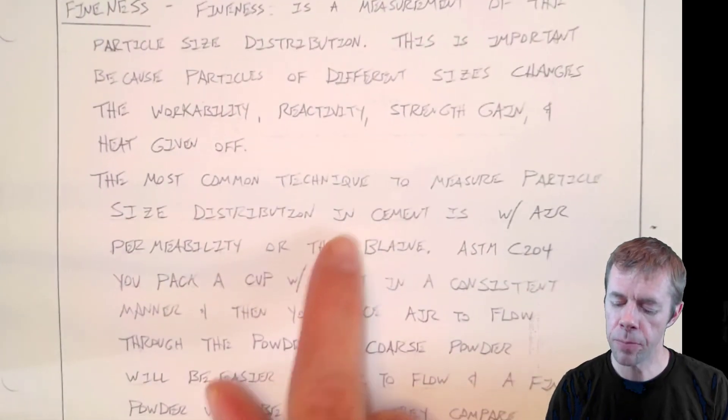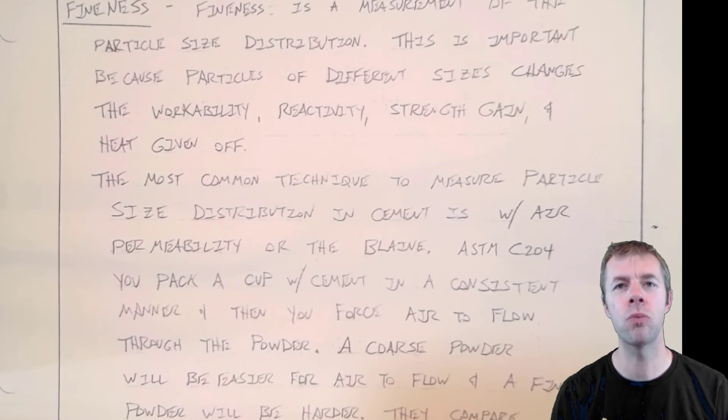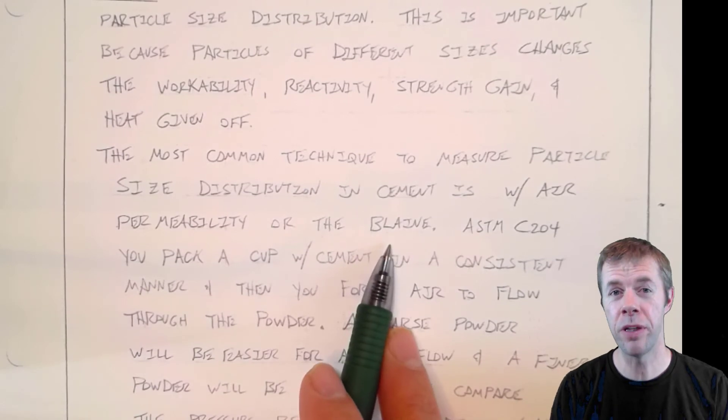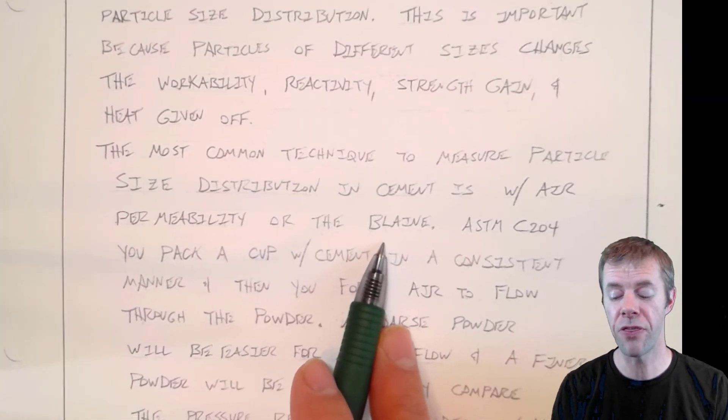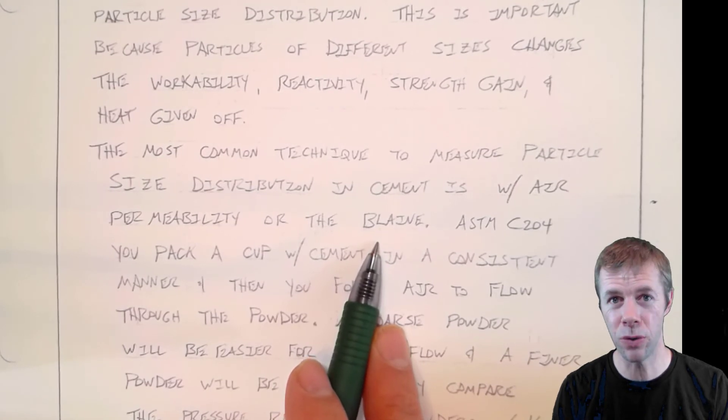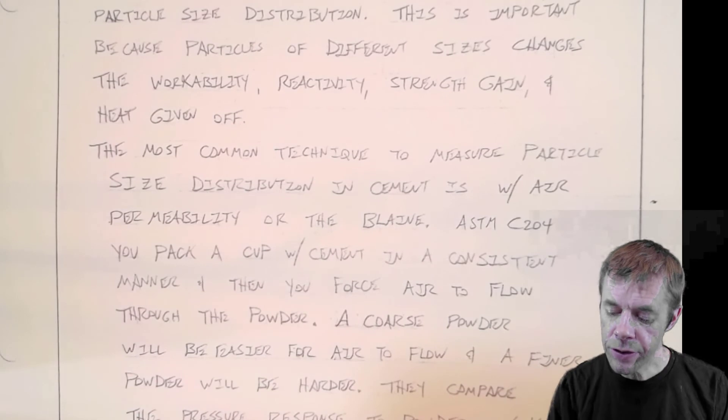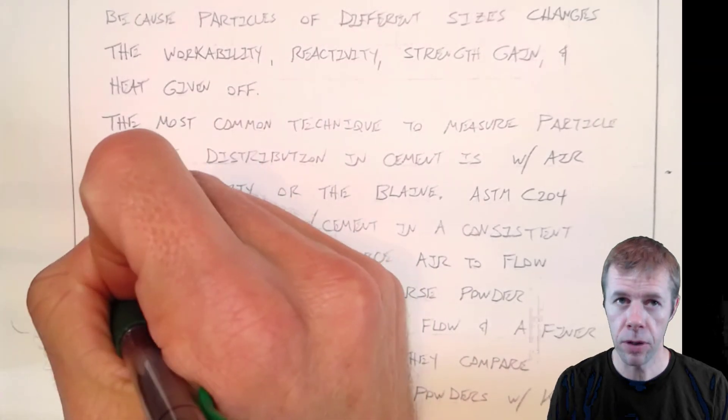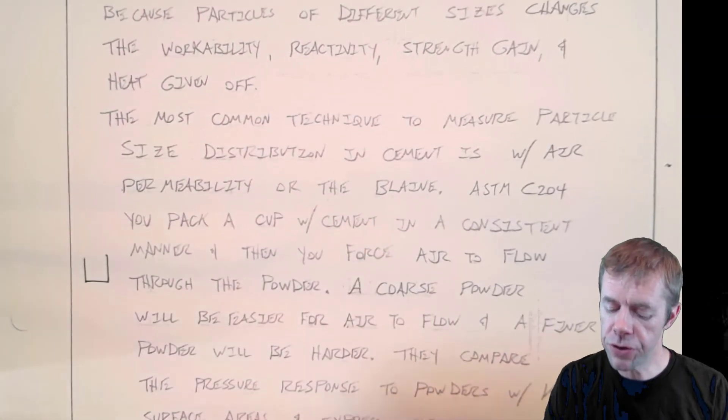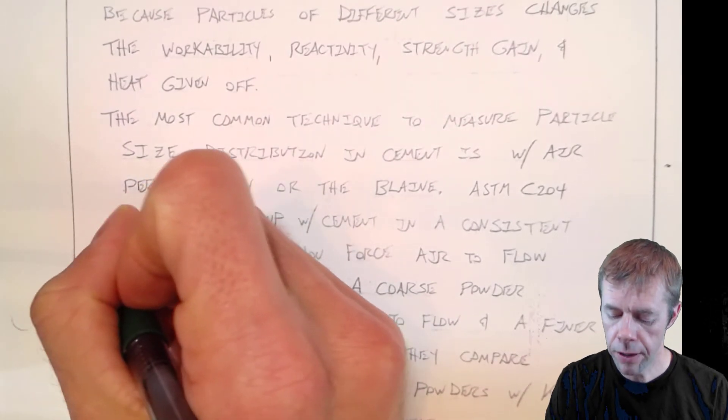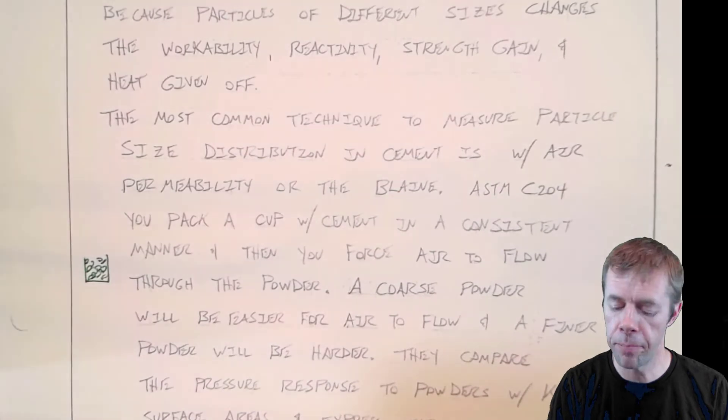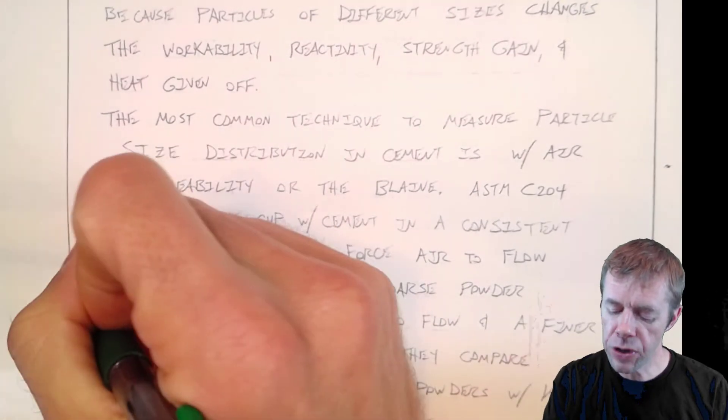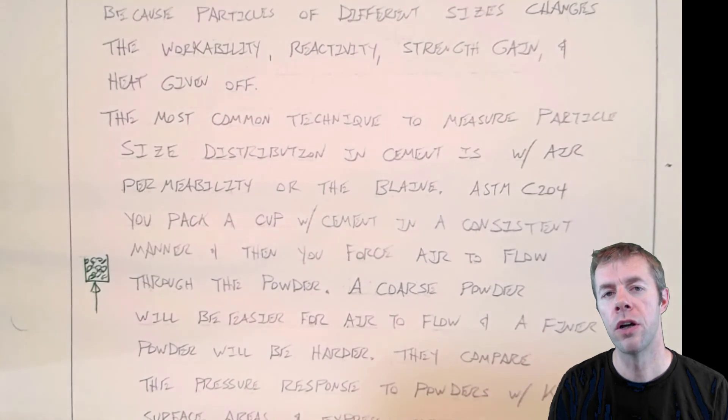The most common technique to measure particle size distribution in cement is air permeability, or people call it Blaine after the gentleman that made it. It's described in ASTM C204. What you basically do is take a cup of a standard volume and you pack it full of cement in a very consistent manner. So you got your cup full of particles there that are packed in a very consistent volume. Then basically you force air through it, you push air through the particles.